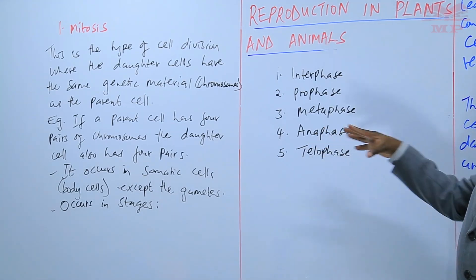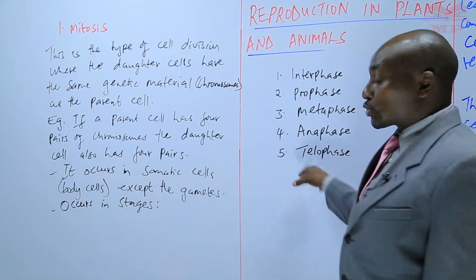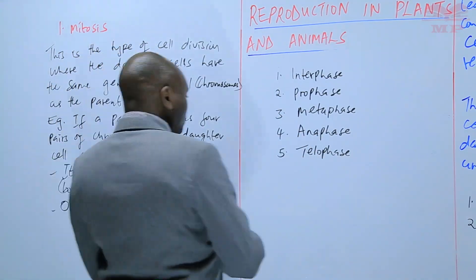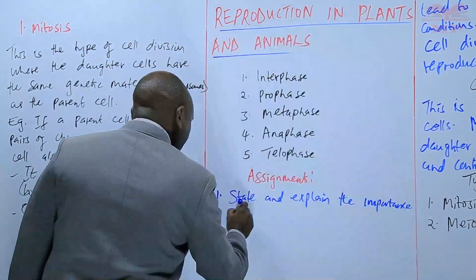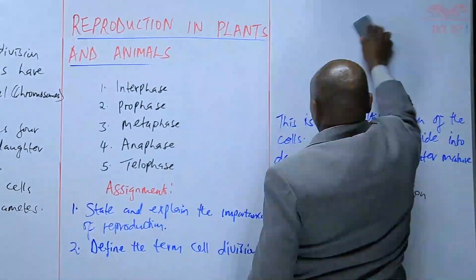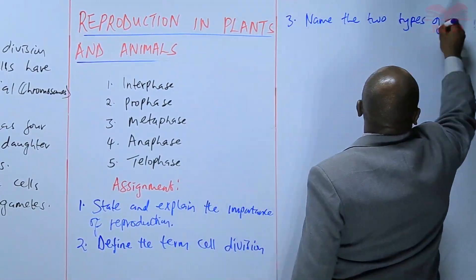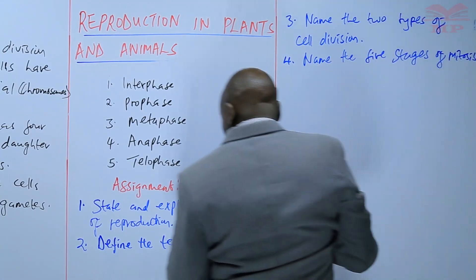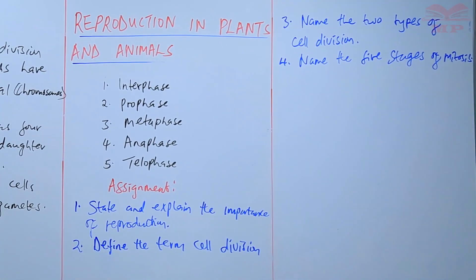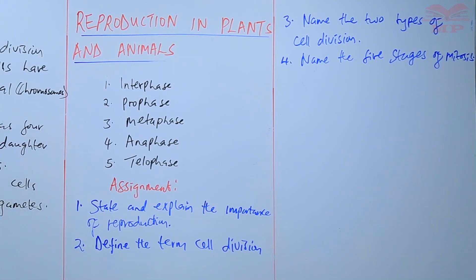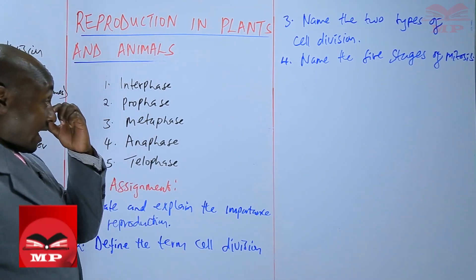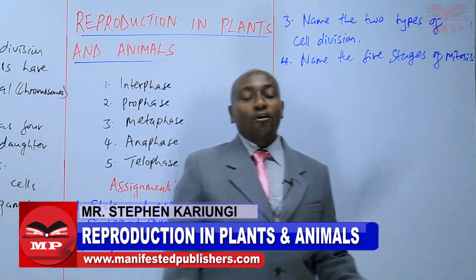We are going to look at what happens in each one of these stages, but for now, we are going to stop there and have a short assignment based on what we have learned. The first question: state and explain the importance of reproduction. Number two: define the term cell division. Number three: name the two types of cell division. And finally: name the five stages of mitosis.